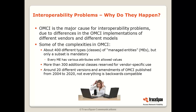Last but not least, there are around 20 different versions and amendments of OMCI. OMCI started in 2004, with the earliest G984.4 being GPON only, going all the way to the latest 2020 amendment which supports XGPON, XGSPON, NGPON2, and GPON. Not everything is backward compatible, so you may have one end running a more advanced version than the OLT, meaning some of its attributes or MEs may not be supported by the other end.